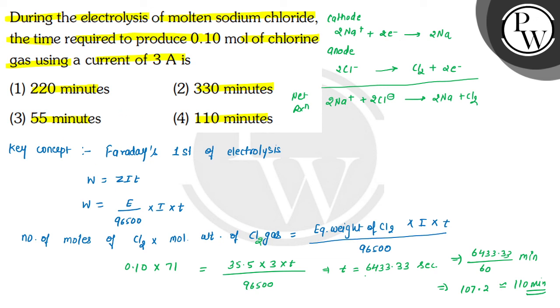So time required to produce 0.10 mol of chlorine gas using a current of 3 amperes is 110 minutes, which is given in option 4. Hence option 4 will be the correct choice for this question. Hope you understood it well. All the best and thank you.